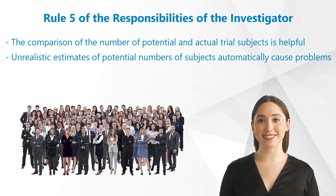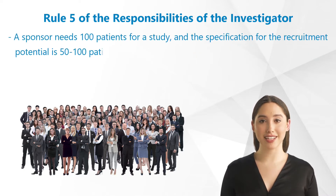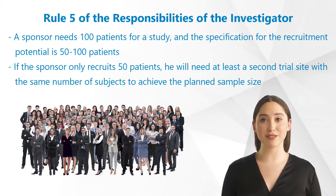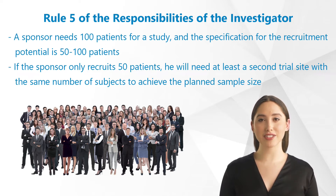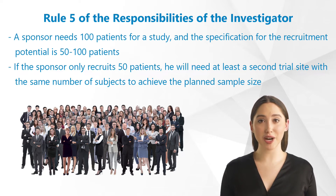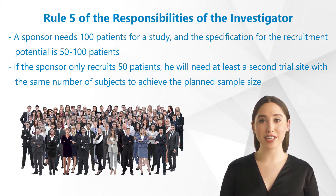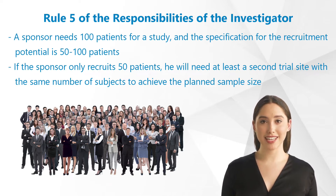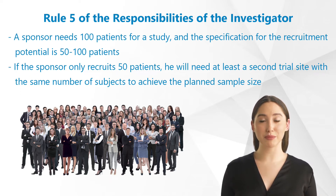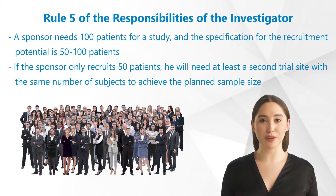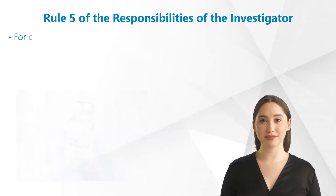Unrealistic estimates of potential numbers of subjects automatically cause problems. For example, a sponsor needs 100 patients for a study, and the specification for the recruitment potential is 50–100 patients. The sponsor is thus faced with a dilemma: if he only recruits 50 patients, he will need at least a second trial site with the same number of subjects to achieve the planned sample size, and if he only recruits 25 subjects, a more comprehensive recruitment or even an extension of the study is inevitable.